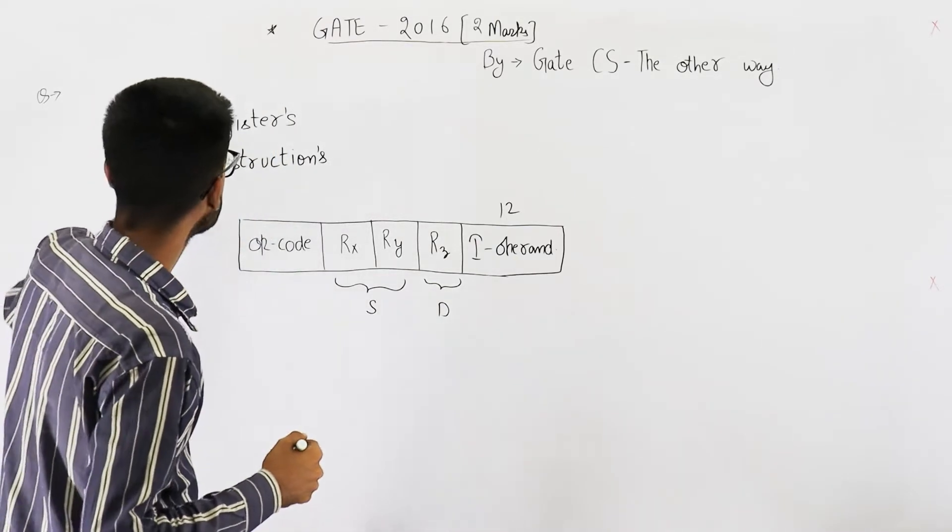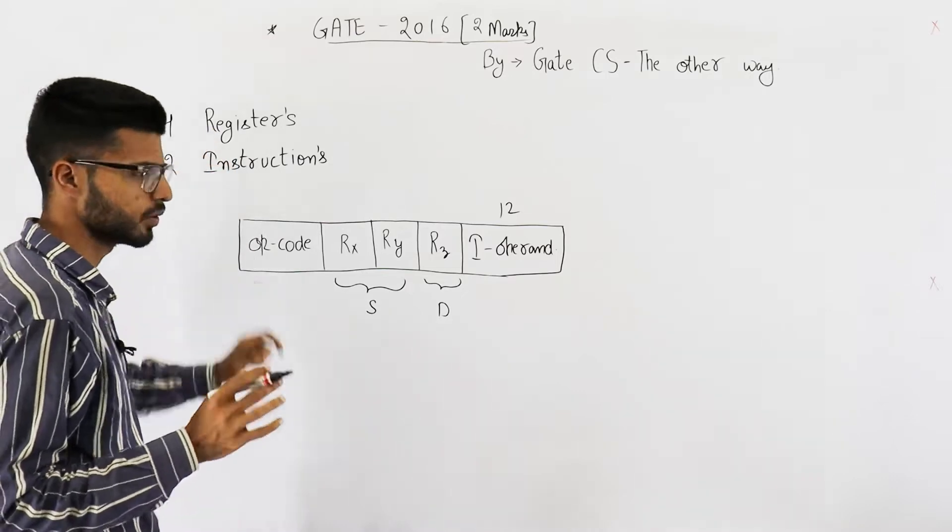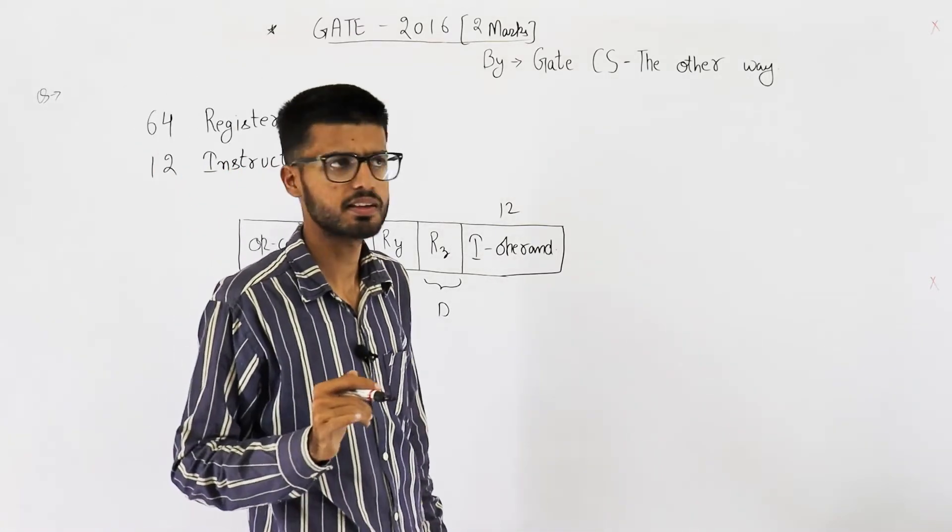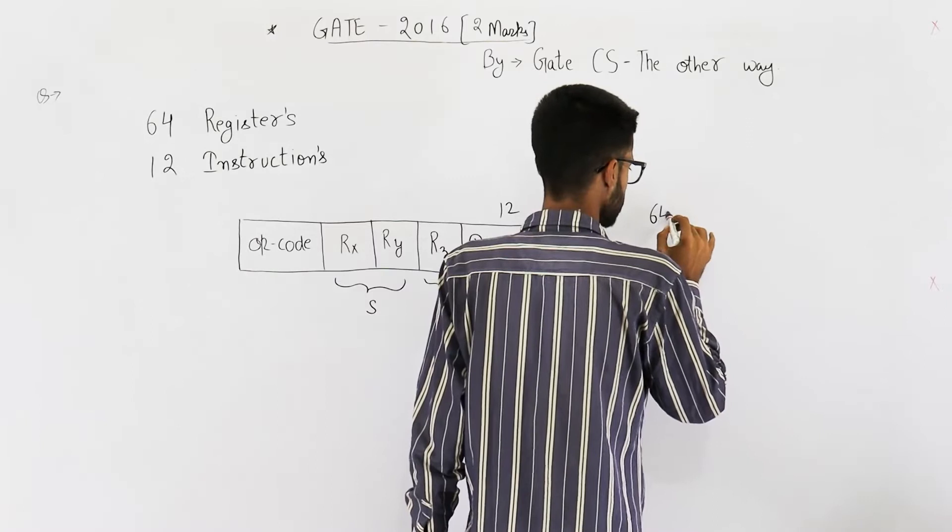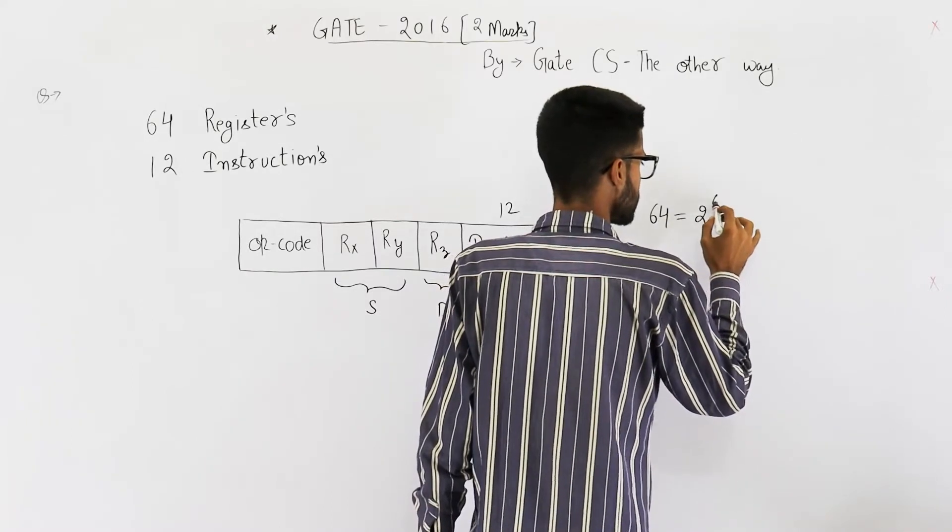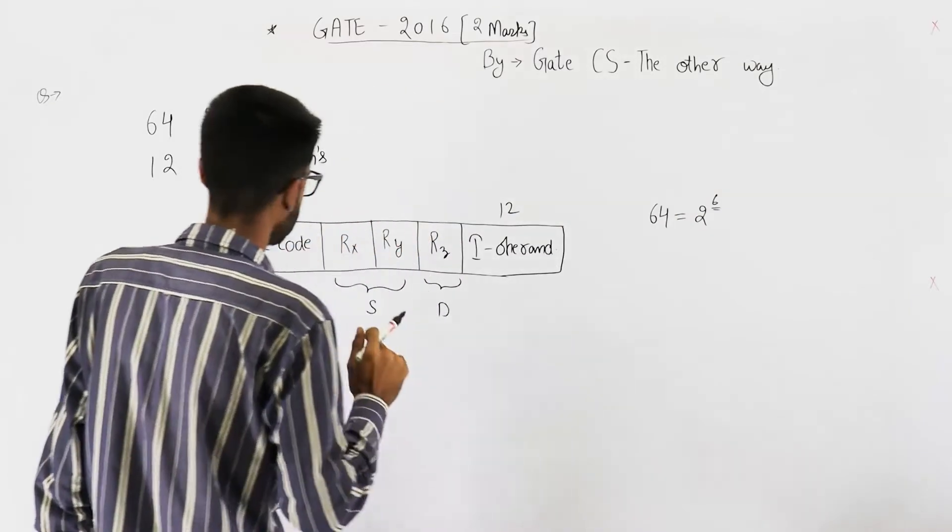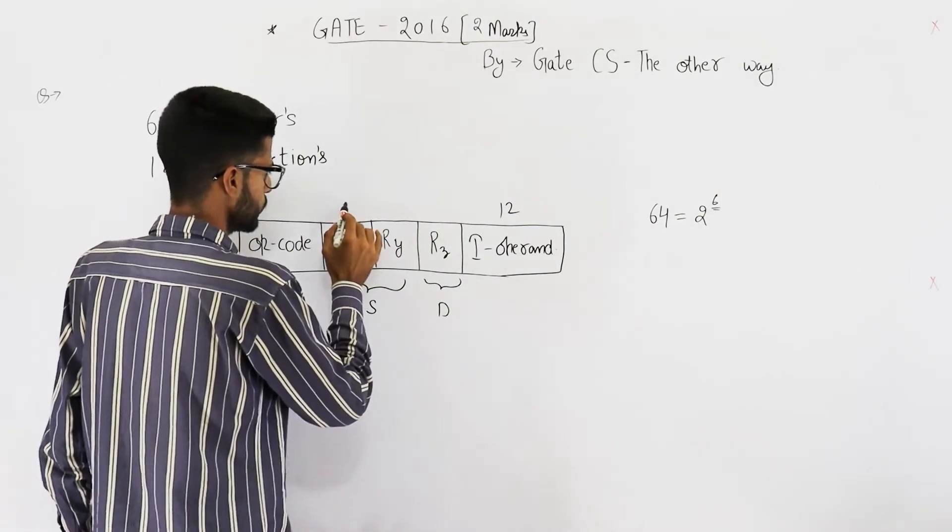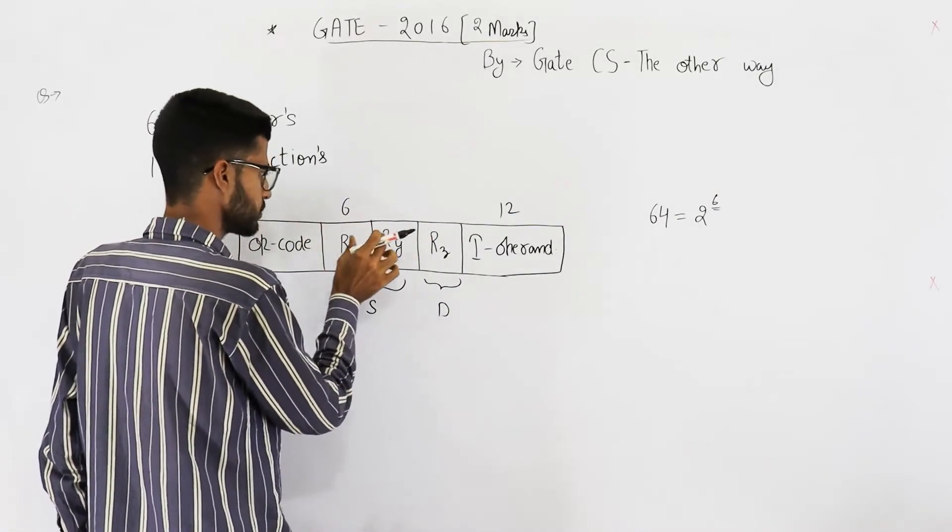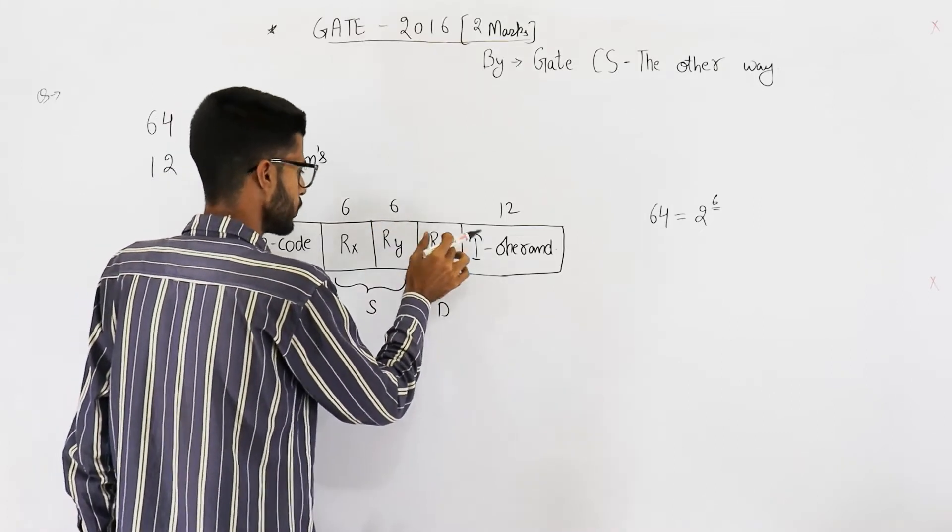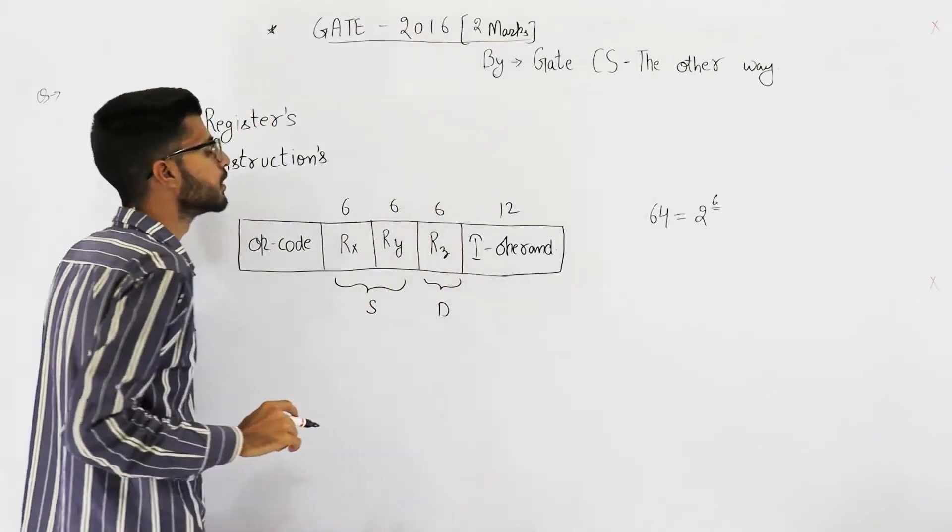Now, if you have 64 registers, you need 6-bits to identify one register because 64 is 2 to the power 6. That means 6-bits will be enough for identifying one of them. So, you get to know this one is of 6-bits. This field is also of 6-bits. So is this field.